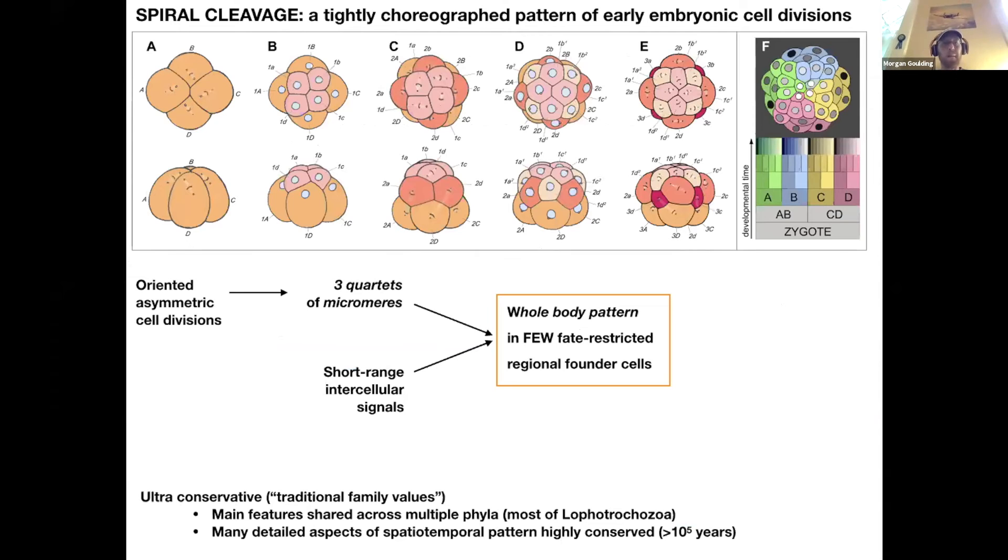I want to begin by setting the stage introducing this phenomenon of spiral cleavage, which is how a lot of animals build their body, setting up specified founder cells in particular places, and then short range intercellular signaling completes the body pattern at very early stages of development. In this situation, the timing and geometry of cell division is very critical. You can tell because it's highly conserved. We have traditional family values here going back to the Cambrian.